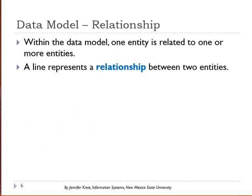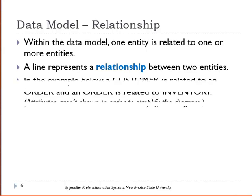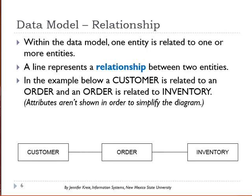Within the data model, one entity is related to one or more other entities, and that relationship is shown as a line drawn between the two entities. We have an example here of customer related to order, and order related to inventory — we're not showing attributes just to keep the diagram simple.